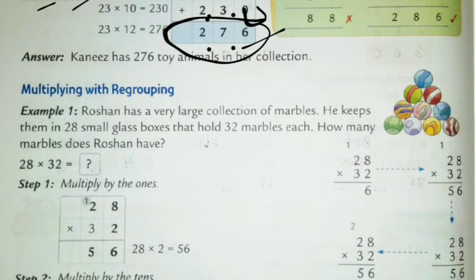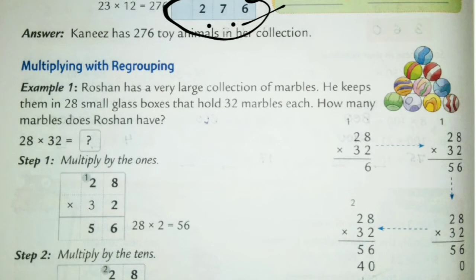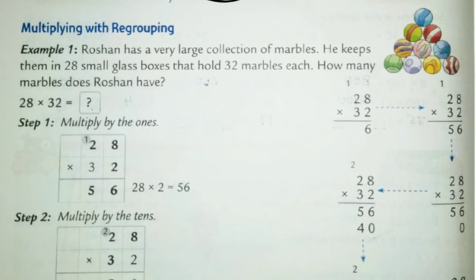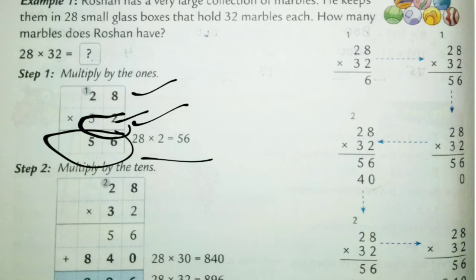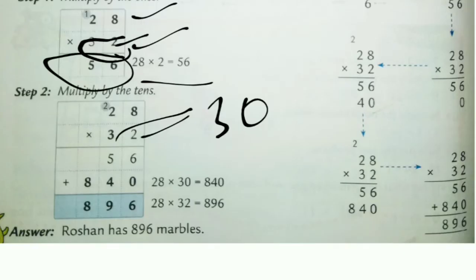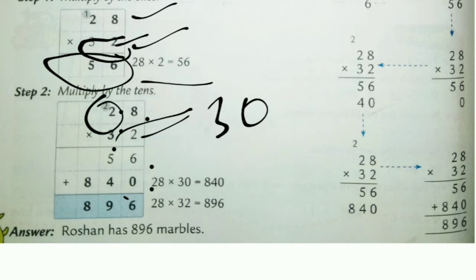The next method is multiplying with regrouping — carry is also involved in ones as well as tens place. For example, 28 multiplied by 32. Always multiply by ones place first, then tens place. 28 multiplied by 2 gives 56. Then multiply by 10 — so 3 will be in tens place, and the zero remains.